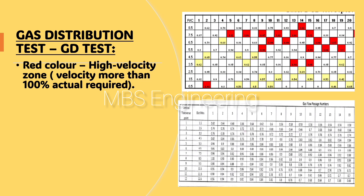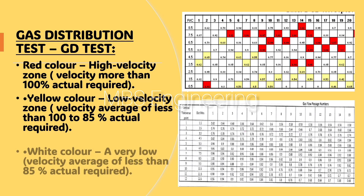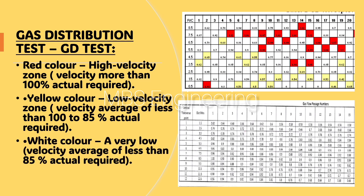The readings are tabulated with all details like average velocities and deviations, and graphs are plotted and analyzed. Please refer to the GD screen sample readings for better understanding. Red color indicates a high velocity zone — velocity more than 100% of actual required. Yellow color indicates a low velocity zone — velocity average between 85% and 100% of actual required. White color indicates a very low velocity zone — average less than 85% of actual required.